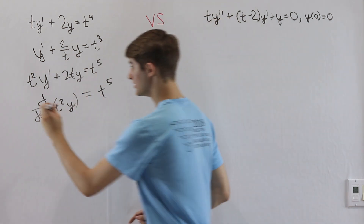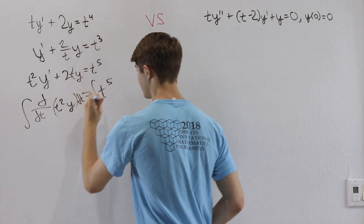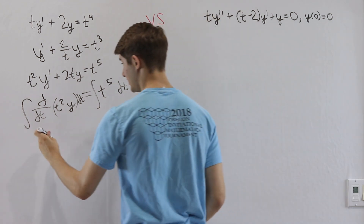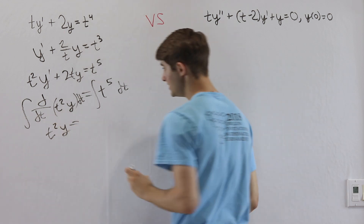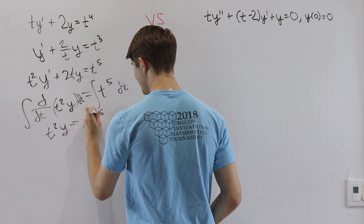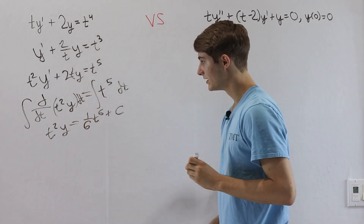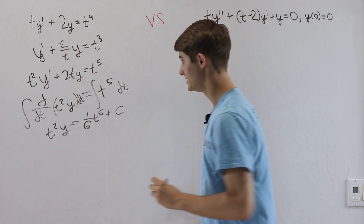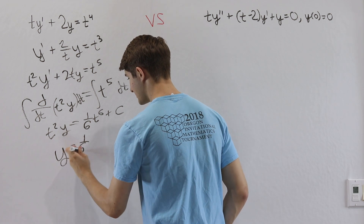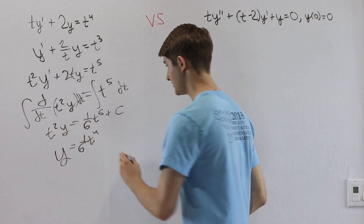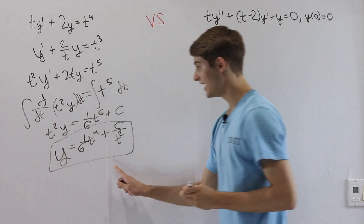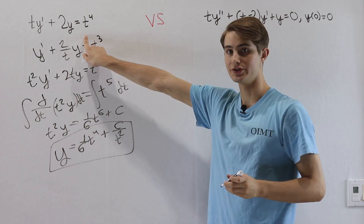To solve this, we integrate both sides with respect to t. On the left side the integral and derivative cancel, giving us t squared y. On the right side, the integral of t to the 5th is one-sixth t to the 6th plus C. Dividing by t squared, our final result is y equals one-sixth t to the 4th plus C over t squared.